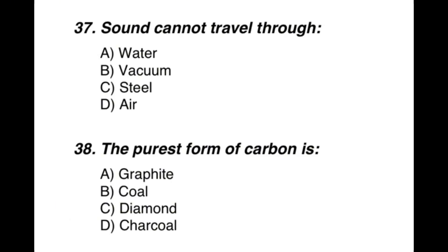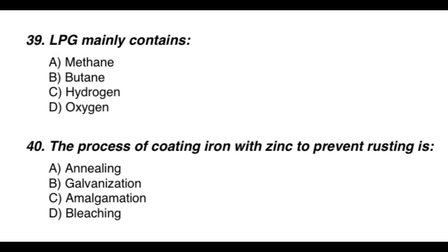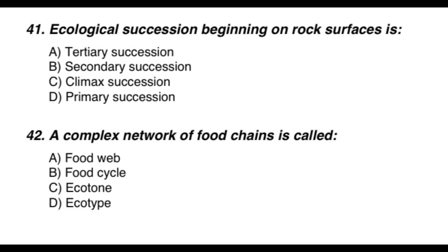Question 37: Sound cannot travel through — the correct option is B — vacuum. Sound can travel through water, solid, and air. Question 38: A repeated question — the purest form of carbon is — the correct option is C — diamond. Question 39: LPG mainly contains — the correct option is B — butane. Question 40: The process of coating iron with zinc to prevent rusting is — the correct option is B — galvanization.